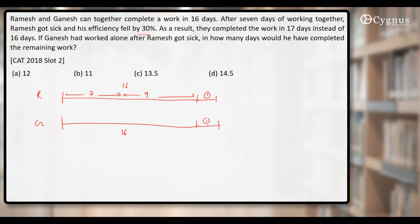Now, what's the reason behind this? Because the efficiency of Ramesh fell by 30%. Let's say Ramesh can do X units per day. He'll work at the same efficiency for the first 7 days. But for the remaining days, his efficiency will become 0.7X. Now, he'll be working at which efficiency? 0.7X.